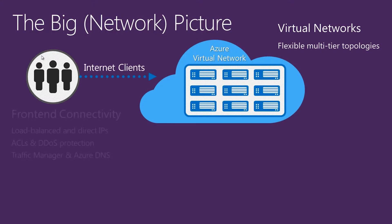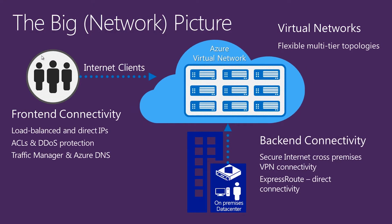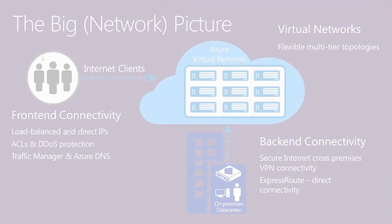We'll first start by looking at the big network picture. When we look at overall networks and connectivity to services, there are three major tiers. We start with the internet clients — these are typically external-facing clients or partners coming in from a front-end, coming in either through load-balanced IP addresses, direct IP addresses, or maybe NAT rules. We can also have ACLs or prevent DDoS attacks, so we're doing some level of security filtering.